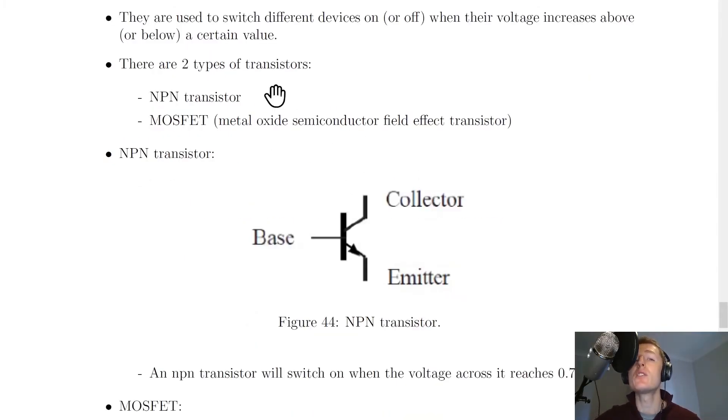Now there are two types of transistors you need to know about: the NPN transistor and the MOSFET, which stands for Metal Oxide Semiconductor Field Effect Transistor. Notice how we don't say MOSFET transistor because transistor is in the name—that would essentially be like saying transistor transistor, which doesn't really make sense.